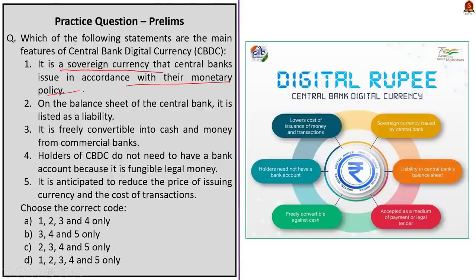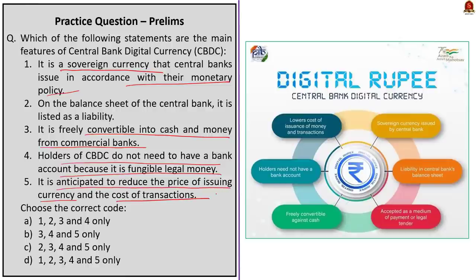Statement No. 2: on the balance sheet of the central bank, it is listed as a liability. Statement No. 3: it is freely convertible into cash and money from commercial banks. Statement No. 4: holders of CBDC do not need to have a bank account because it is a fungible legal money. Statement No. 5: it is anticipated to reduce the price of issuing currency and the cost of transaction. Which of the statements given above are correct? First, we will see some basics about CBDC, then we will get back to the question.